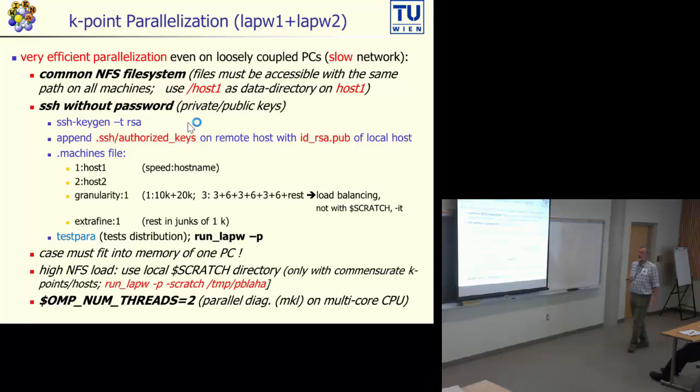Now there is one limitation of this k-point parallelization. The case must fit into your memory. So if your unit cell gets larger and larger, maybe you end up with only one k-point, so you cannot do k-point parallelization. And furthermore, this big matrix will not fit anymore in the memory of your computer.